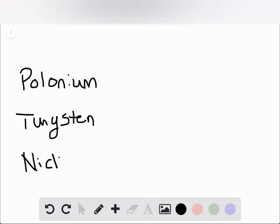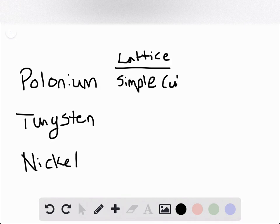To do this problem you really only need to understand the type of lattice formed by each of these metals in order to determine how many atoms they have per unit cell. Polonium is a classic example of something that forms a simple cubic structure, and because it forms a simple cubic structure, the number of atoms per cell is going to be one.